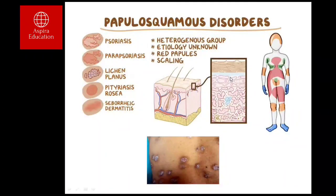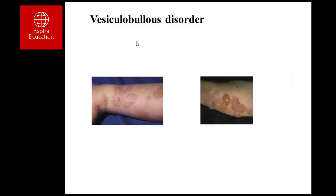The common papillosquamous disorders are psoriasis, parapsoriasis, lichen planus, pityriasis rosea, and seborrheic dermatitis. These disorders have similar morphology but heterogeneous etiology. They usually present with papules and scaling — this morphological appearance is common across these diseases, even though the underlying causes differ.